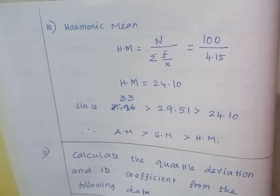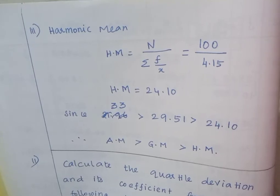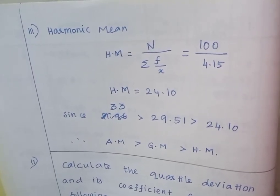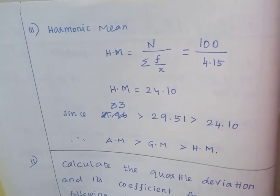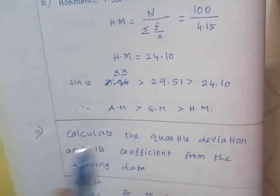Next, find the harmonic mean. The formula for harmonic mean is HM equals N divided by summation f divided by x. 100 divided by 4.15. Summation f by x is 4.15. Harmonic mean equals 24.10. Arithmetic mean is 33.